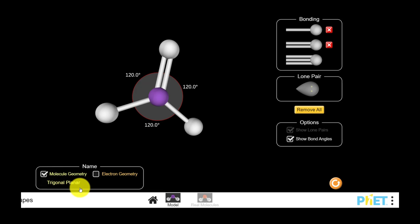We call this a trigonal planar shape. It's a flat triangle, and that's true for both the molecular geometry and the electron geometry.